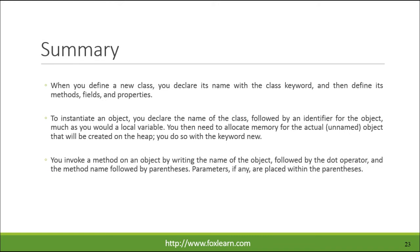When you define a new class, you declare its name with the class keyword, and then define its methods, fields, and properties. To instantiate an object, you declare the name of the class, followed by an identifier for the object, much as you would a local variable. You then need to allocate memory for the actual, unnamed object that will be created on the heap — you do so with the keyword new.